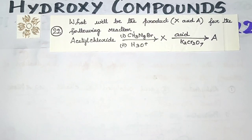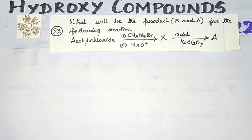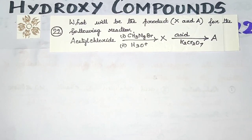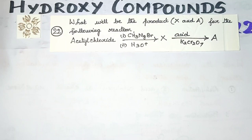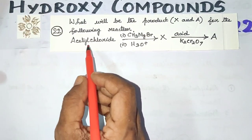Acetyl chloride first, treated with methyl magnesium bromide, followed by acid-catalyzed hydrolysis, giving product X. This X is then treated with acidified potassium dichromate and compound A is formed. So what are compounds A and X? That is the question.